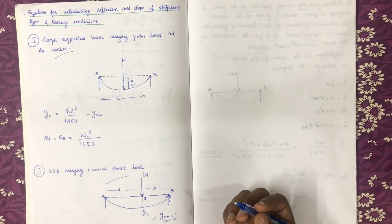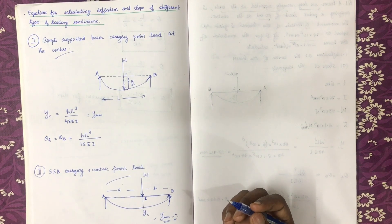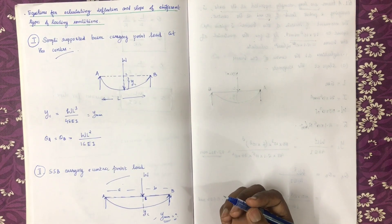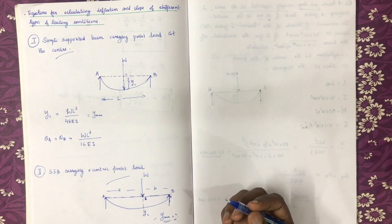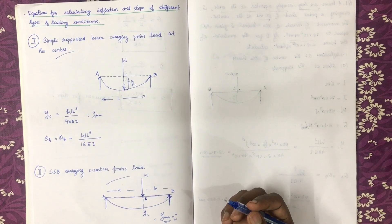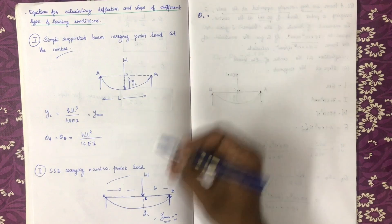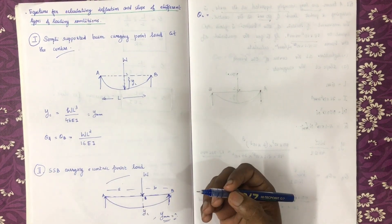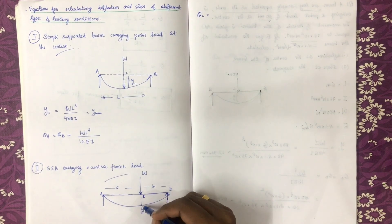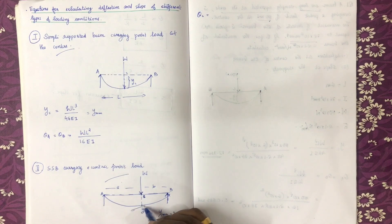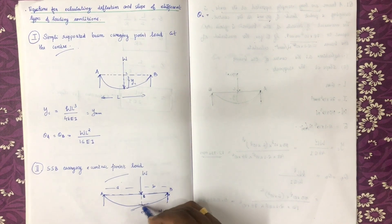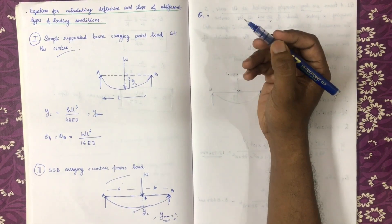At the center, we consider theta A and theta B. What is the value? First of all, we have a deflection value, that is theta C. This is the point of deflection. We have a tangent on the left-hand side, that is theta C.